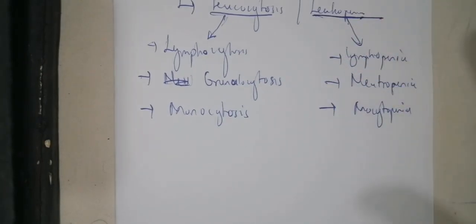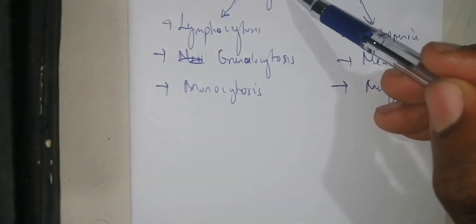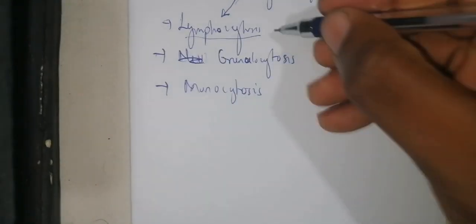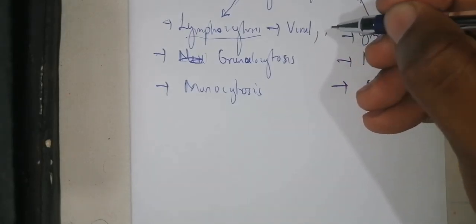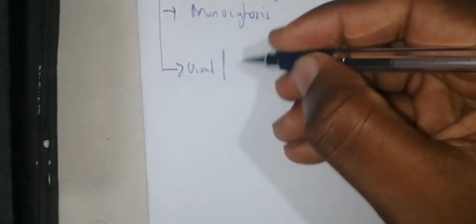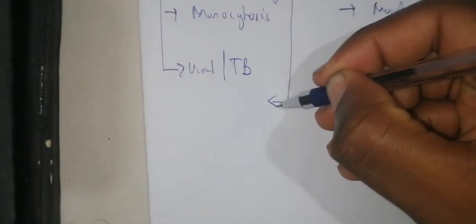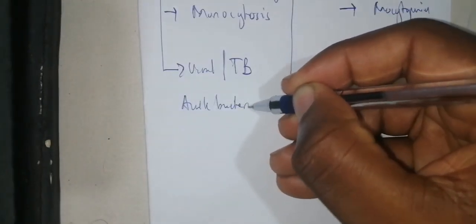When you have leukocytosis with lymphocytosis, you generally think of viral infections or deep-seated infections. You also think of chronic infections such as tuberculosis, which is typically associated with lymphocytosis.